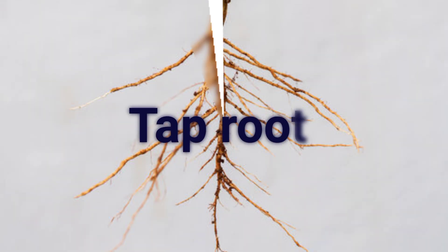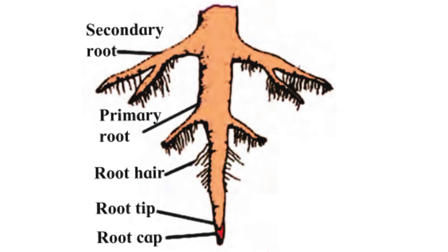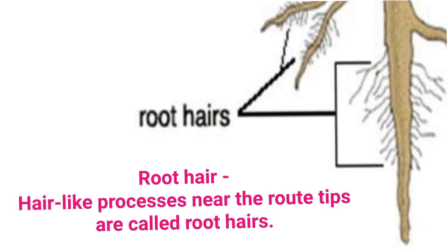Tap root is thicker at the ground and tapers towards the end. The tap root produces secondary roots. The secondary roots grow obliquely and spread far and wide in the soil. Tap roots support the plants.